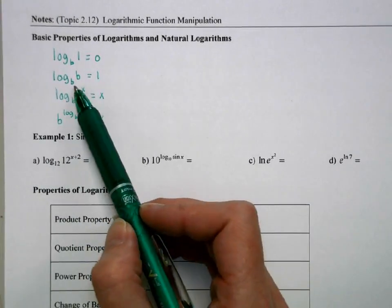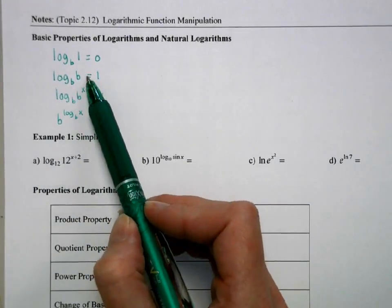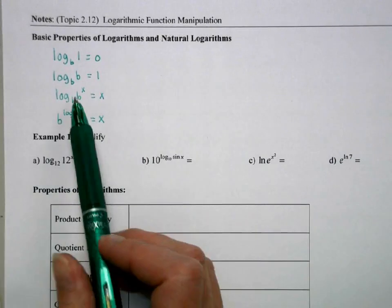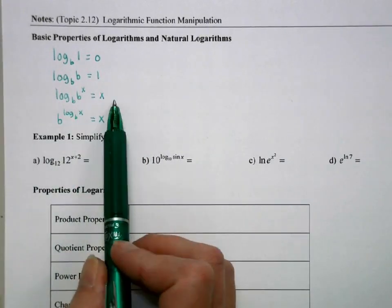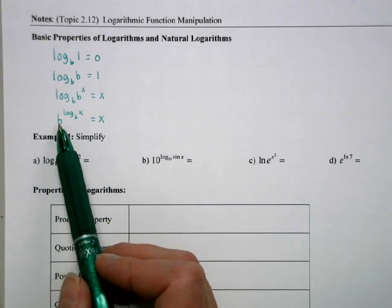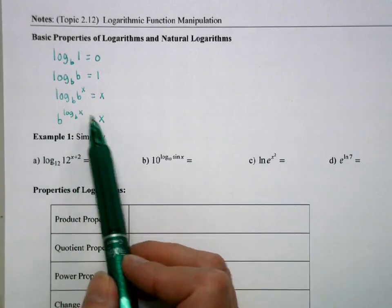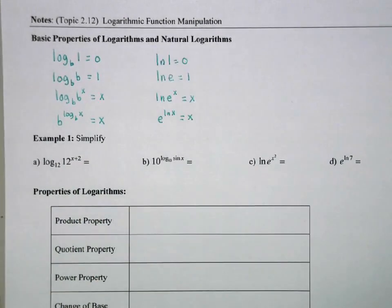Log base b of b is 1. And again, thinking b to what power would give us b will always be 1. And then those inverse relationships, that log base b of b to the x is x, and then the flip of that, b raised to the log base b of x cancels to x. And this follows with all bases,